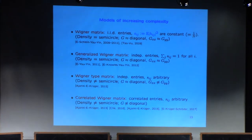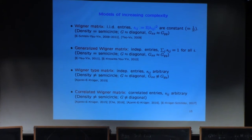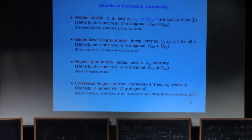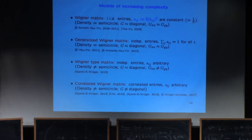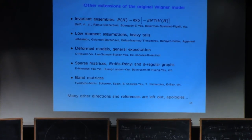The last model is correlated Wigner matrices, where we drop the condition of independent entries and replace it by a certain correlation structure. In that case S_{ij} is not sufficient to describe the second moment — you have to replace it with a four-tensor describing all possible covariances between matrix elements. In this situation even G is not diagonal anymore: the correlations between matrix elements induce a non-trivial decay in the resolvent.